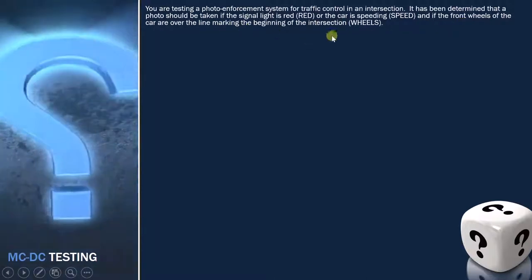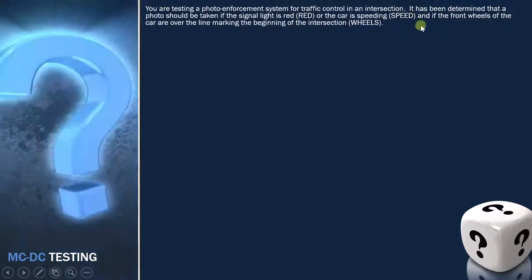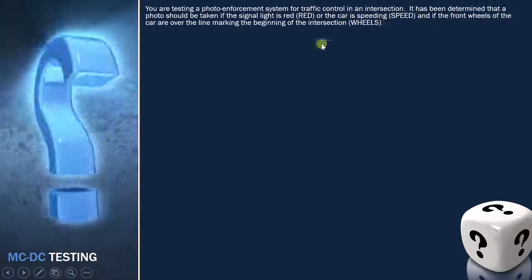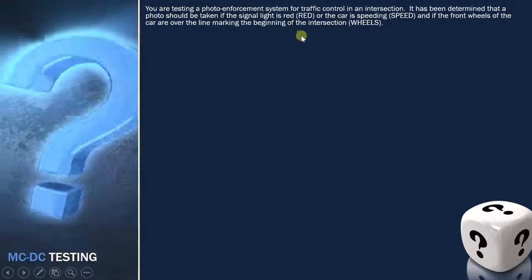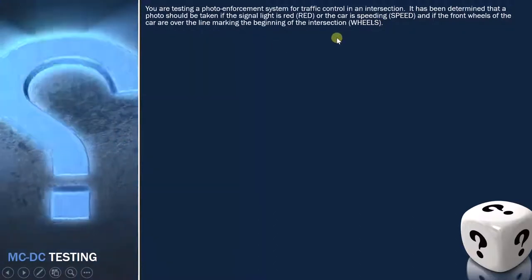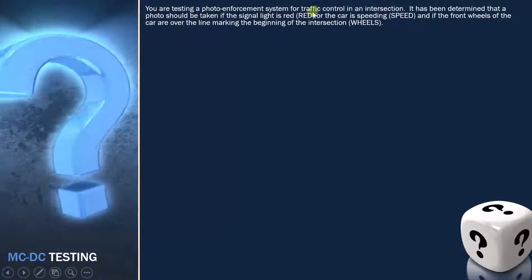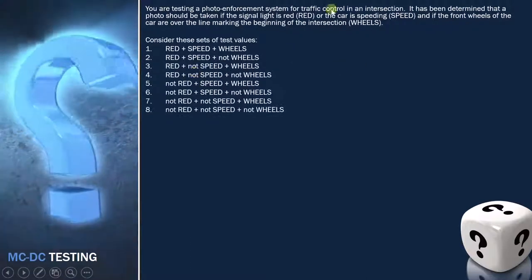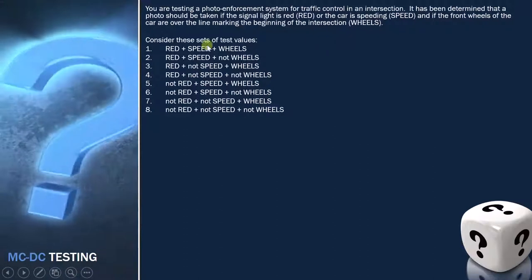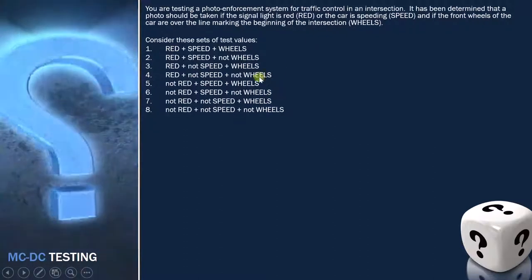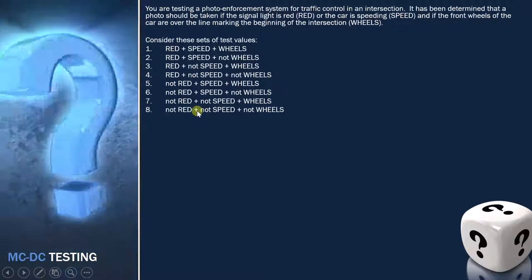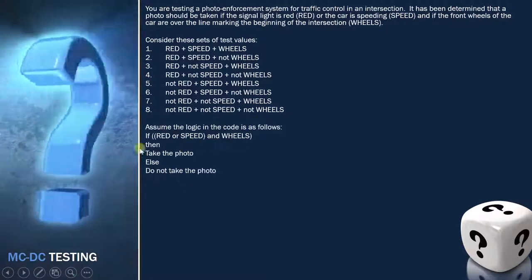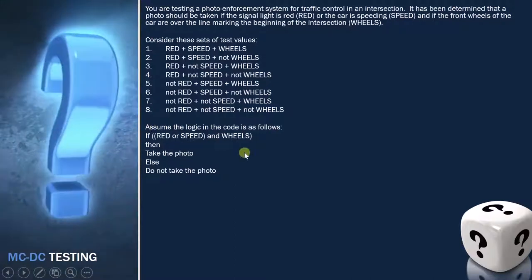So the last condition is the same, but you see that there are three different conditions. The light is red, car is speeding, and the front wheels of the car are crossing the intersection. Now we can have eight different conditions or test cases for these three conditions. These are the different combinations. And if we read this statement, we can write down this particular piece of code which is also provided in the question.